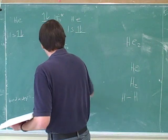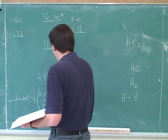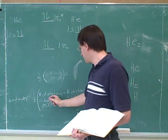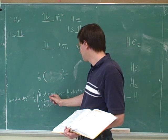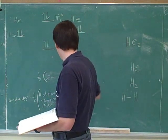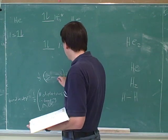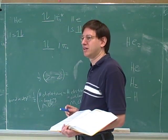Now let's calculate the bond order. So what would this number be? Two. And how about this number? Two. So the bond order would be? Zero.